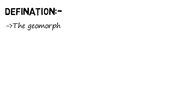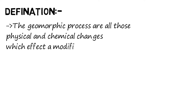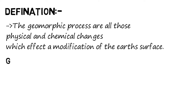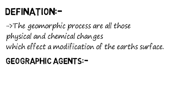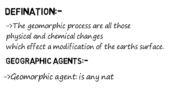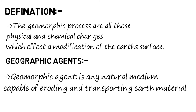The definition is: geomorphic processes are all those physical and chemical changes which affect a modification of the Earth's surface. Now we have to learn what are geomorphic agents. A geomorphic agent is any natural medium capable of eroding and transporting Earth material.